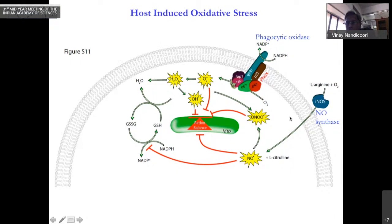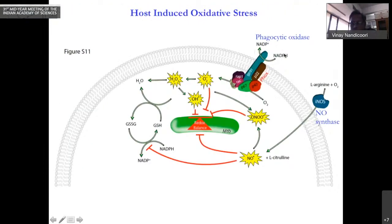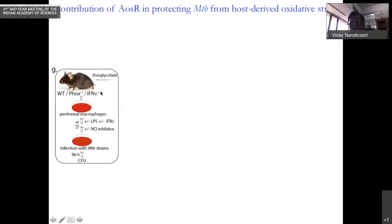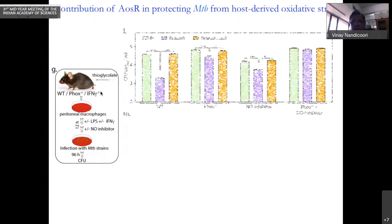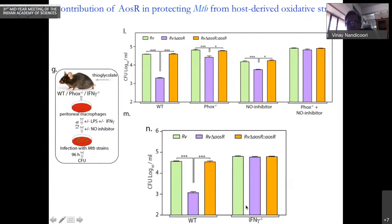To test if this transcription factor indeed plays a role in this, we have used various mutants of mice. Phox knockout is phagocytic oxidase knockout. Interferon gamma feeds into both pathways. We did this work with inhibitors of iNOS. You can see very clearly that in normal condition, there is a clear difference in the mutant. But when you use phagocytic oxidase mutant, the difference is going down but not completely recovered. Nitric oxide inhibitor, going down but not completely recovered. But a combination completely eliminates survival problems the mutant has.